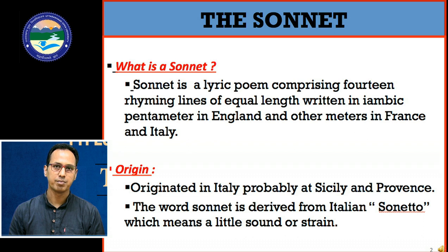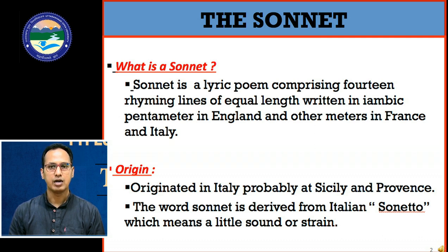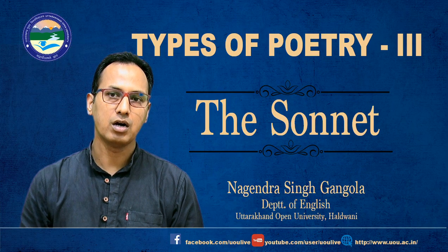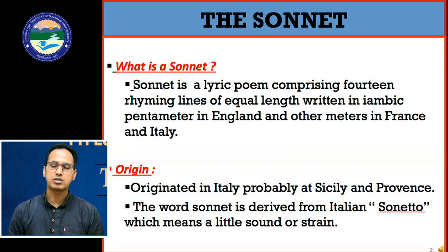A sonnet comprises 14 rhyming lines written in iambic pentameter in England, and other meters in France and Italy. Iambic pentameter is a meter where five unstressed and stressed syllables come one after the other, so iambic pentameter is a very important point here.